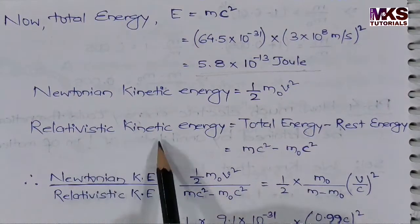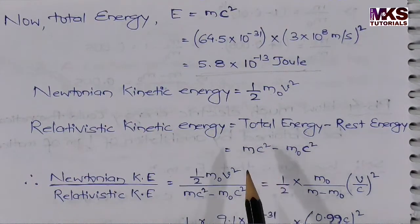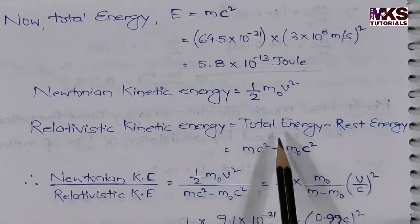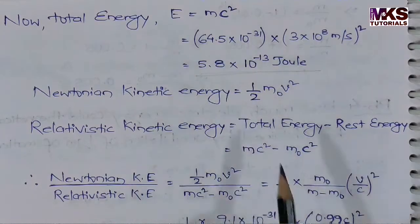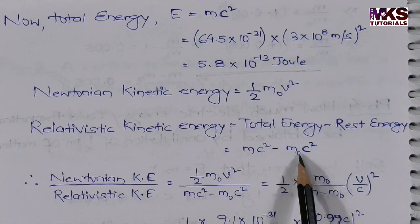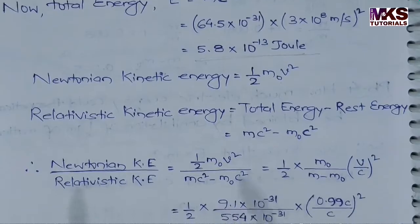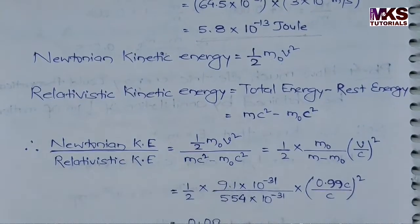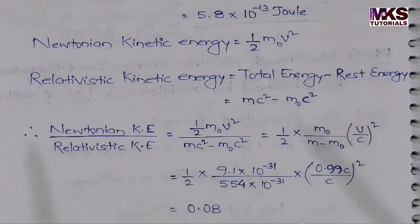And the relativistic kinetic energy is the change in energy, which means total energy minus rest energy. So relativistic KE equals mc² minus m₀c². Now I am going to find the ratio of Newtonian kinetic energy upon relativistic kinetic energy.